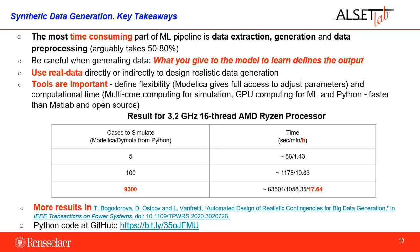Be careful when generating data — what you give the model to learn defines the output. Use real data directly or indirectly for data generation. Tools are important because they define flexibility. For example, Modelica gives full access to adjust parameters and computational time, allowing for multi-core computing for simulation. Use GPU computing for machine learning using Python — this is much faster than using MATLAB.